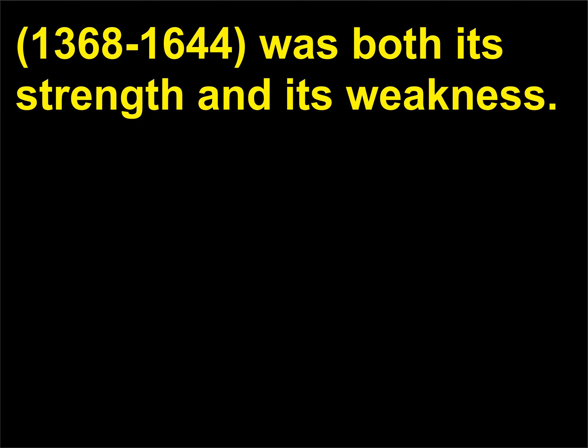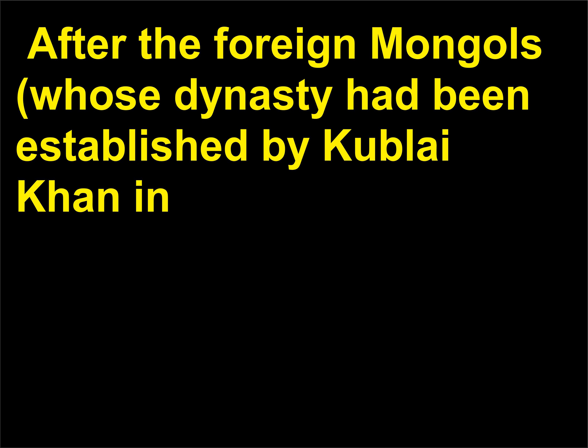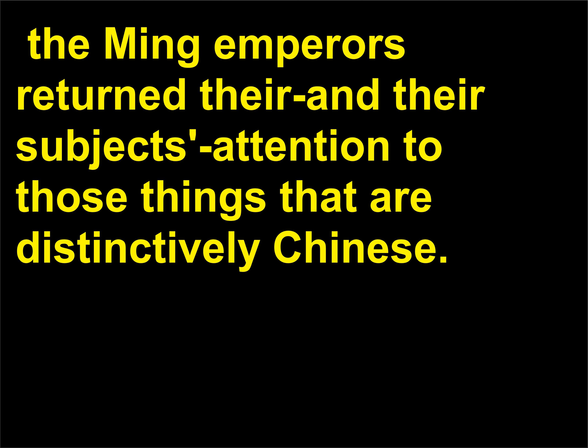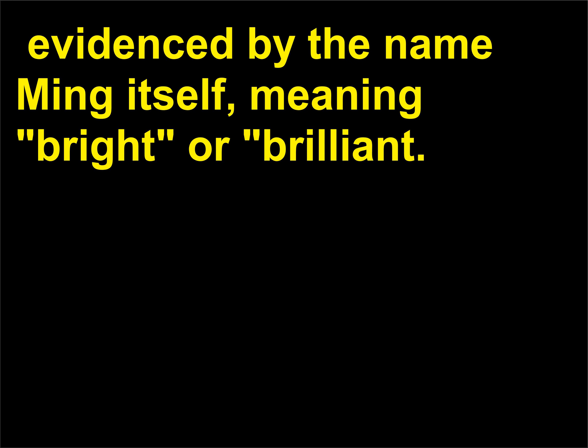What were the highlights of the Ming dynasty? The focus on Chinese culture that was the hallmark of the Ming dynasty, 1368–1644, was both its strength and its weakness. After the foreign Mongols — whose dynasty had been established by Kublai Khan in 1260 — were overthrown as rulers of China in 1368, the Ming emperors returned their and their subjects' attention to those things distinctively Chinese. The focus on Chinese culture produced a flowering in the arts, evidenced by the name Ming itself, meaning 'bright' or 'brilliant.'